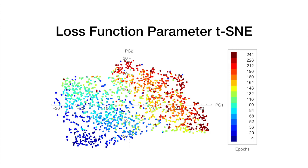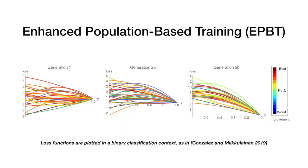The evolved TaylorGLO loss function parameters can be plotted in a t-SNE scatterplot. A temporal structure can be seen, where early loss functions are blue and adapt over time. If we take a look at every loss function from the first, mid, and last generations,